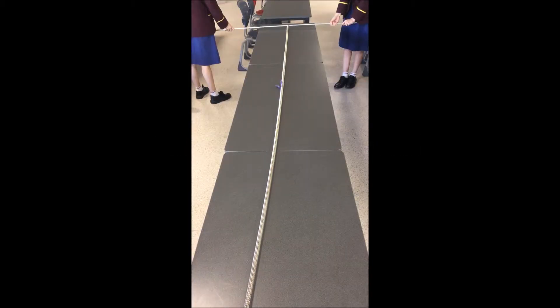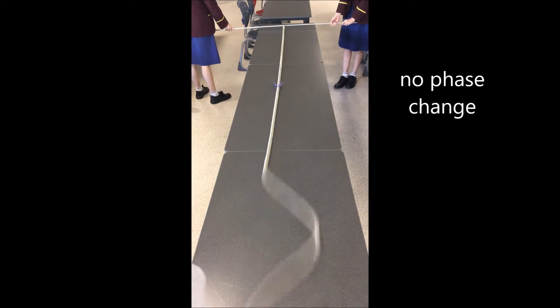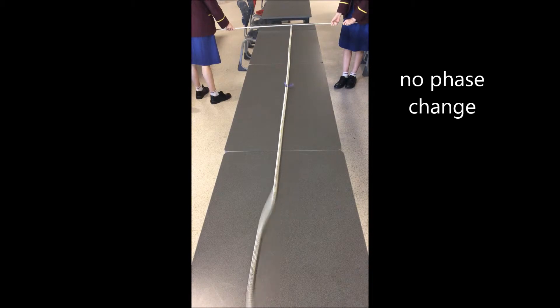Now, in the second example, the end of the spring is free to move on a metal pole. You can see here there's no phase change, so the pulse goes down and it comes back on the same side.